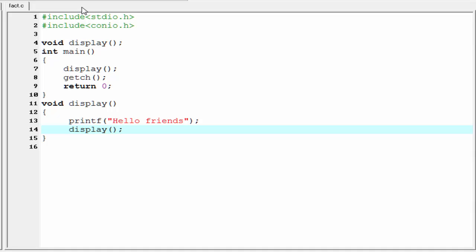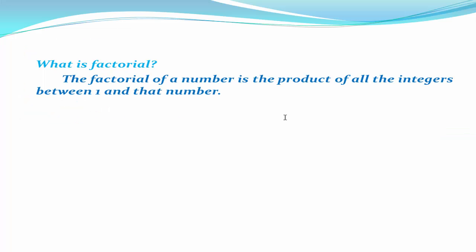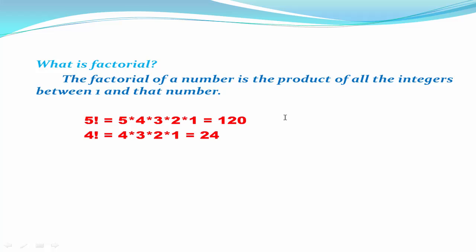Before writing the program, you have to know what a factorial is. The factorial of a number is the product of all the integers between 1 and that number. For example, 5 factorial equals 5 × 4 × 3 × 2 × 1, which is 120. 4 factorial equals 24. Similarly, 3 factorial equals 6, 2 factorial equals 2, 1 factorial equals 1, and 0 factorial equals 1.